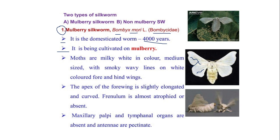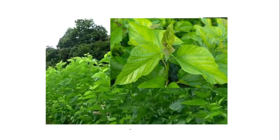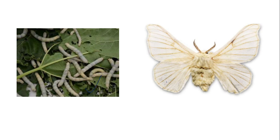The frenulum, which is the wing coupling apparatus, is almost atrophied or absent. Maxillary palpi and anal organs are absent. However, bipectinate antennae are present. These are the mulberry leaves, this is the mulberry silkworm larvae, and this is the adult — note the wavy lines on the fore and hind wings of the silkworm moth, and it possesses bipectinate antennae.